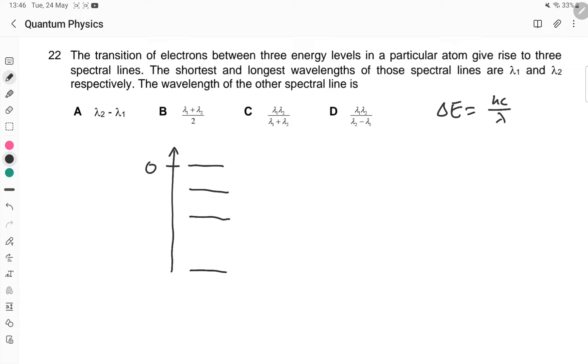The largest wavelength is λ₂, so λ₂ must be the smallest transition. So this energy gap equals hc/λ₂. The shortest wavelength λ₁ must be this one, so this is hc/λ₁. So the missing one will be here, we'll just call it λ₃.